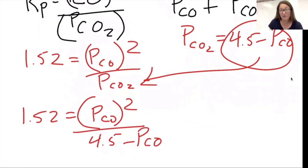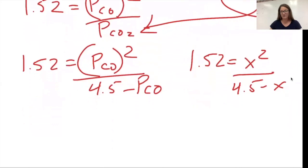I'm going to rewrite it with X because it's going to be a lot of writing here and I'll like it a little bit better. So I have 1.52 equals X squared over 4.5 minus X. There's no way to get out of doing the quadratic here.